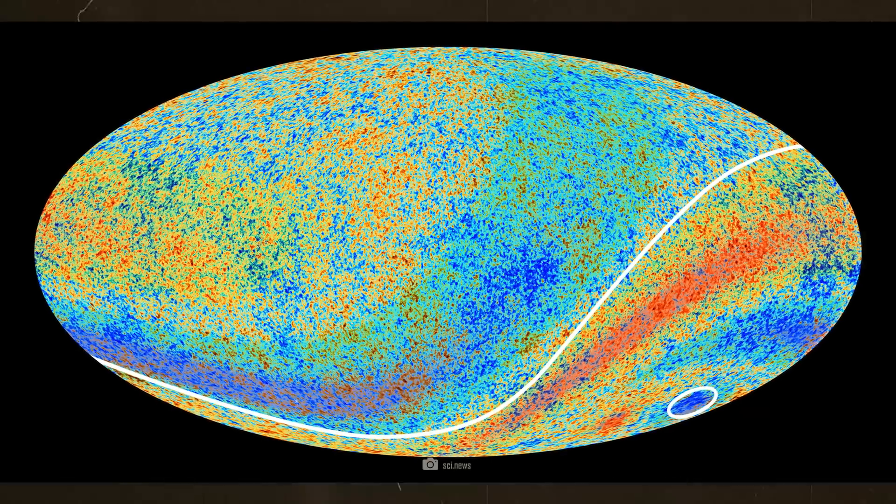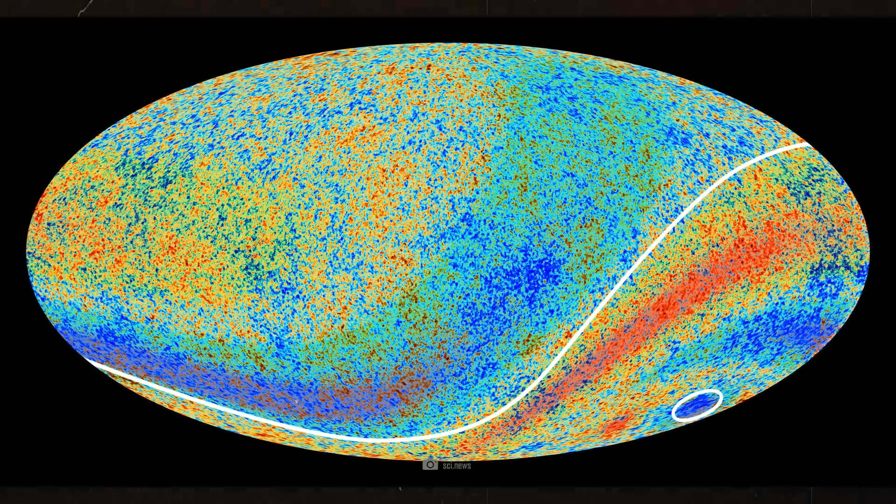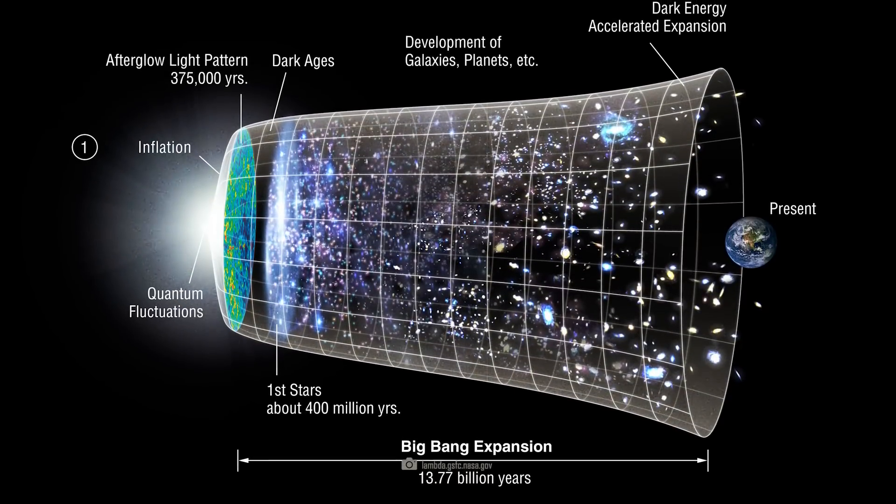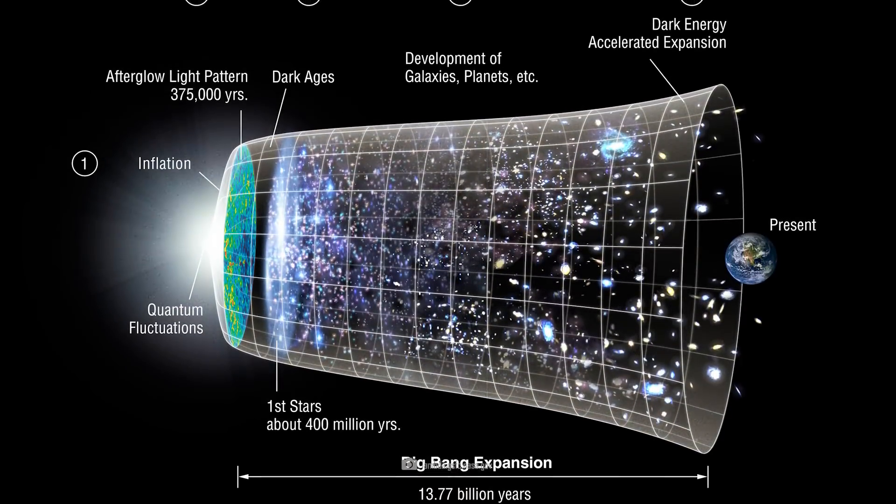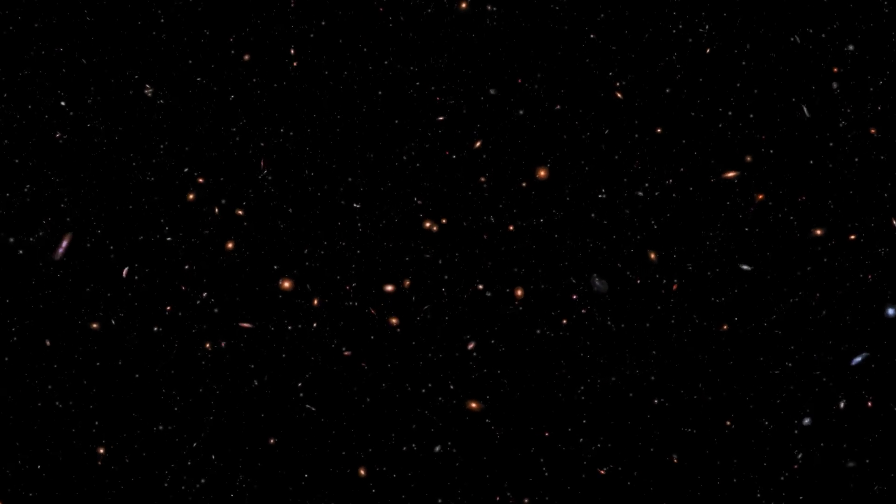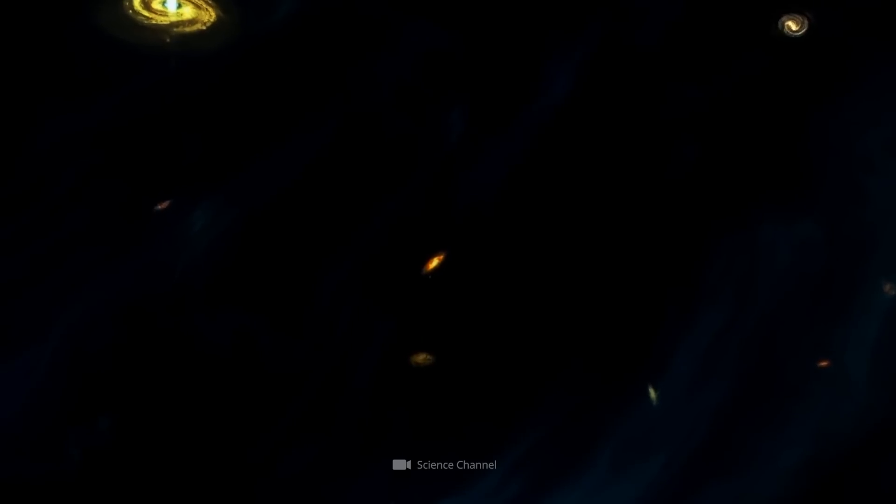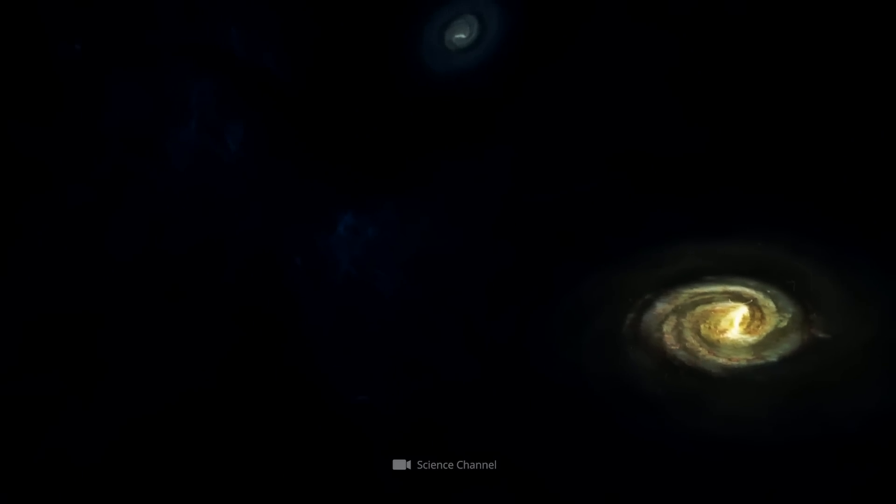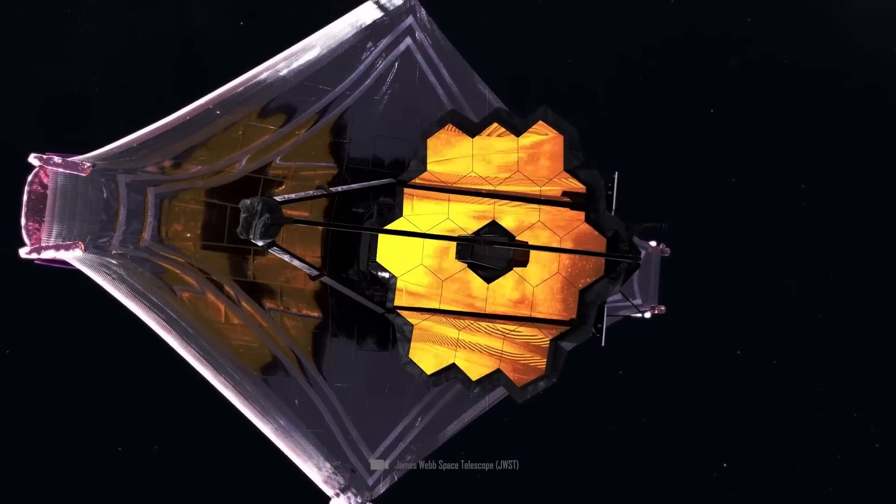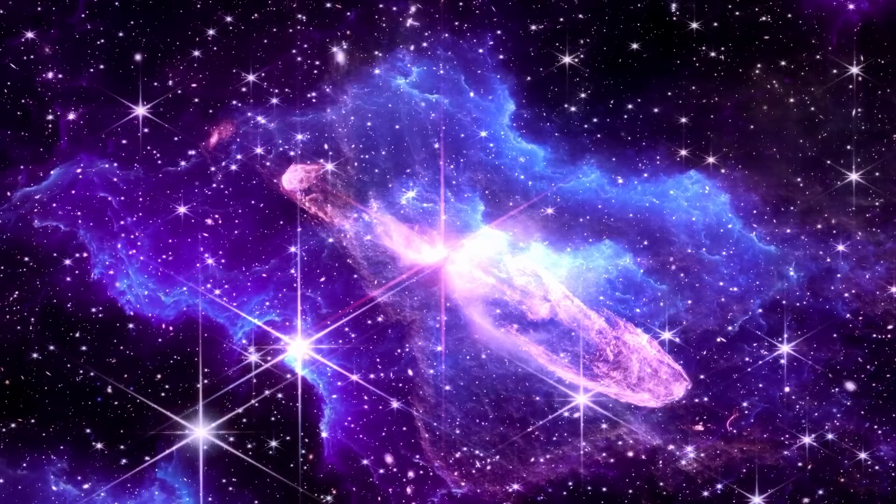The observations of the cosmic background radiation that have so far provided us with information about the early universe are based on the assumption of a constant speed of light. Variations could mean that all our calculations of distances and times are wrong. Then our estimates of the age of the universe and the speed of its expansion would also be wrong. This could explain why the Webb telescope shows us galaxies that are so old that they shouldn't even exist.